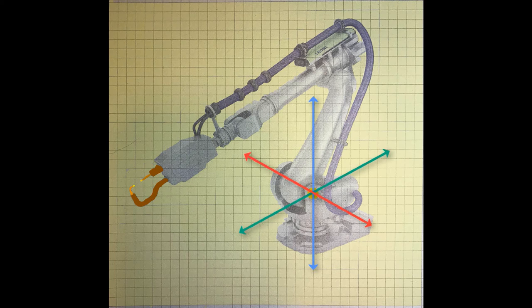In the robot world, we call the front-to-back axis x, the left-to-right axis y, and the up-and-down axis z.